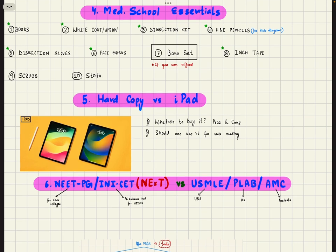Talking about med school essentials. First I talked about books. In addition to that, you have white coat apron, dissection kit, H and B pencils for drawing histology diagrams, dissection gloves, face masks, bone set if you can afford it, inch tape, scrubs and stuff. The items marked in green or with a star are essential for first year.